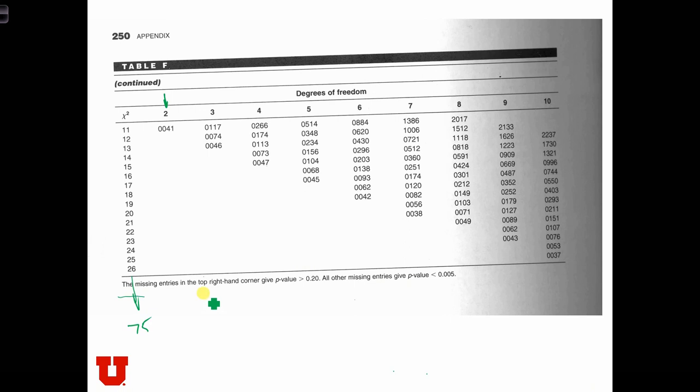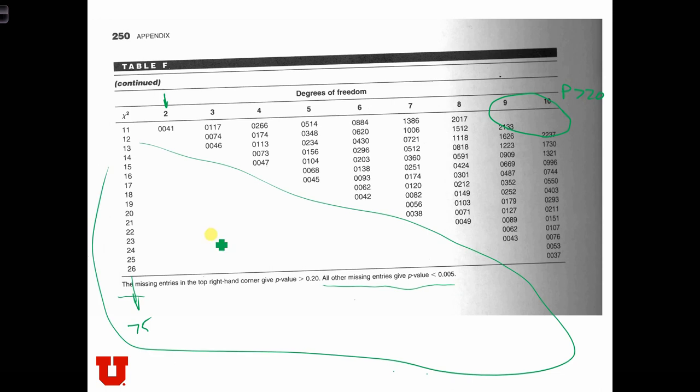What does this subscript say here? The missing entries in the top right-hand corner, so these are those missing entries over here, have p-values greater than 20%, so insignificant p-values. And all other missing entries give p-values of less than half a percent. So all of these entries over here have p less than 0.005.